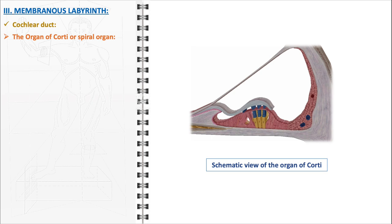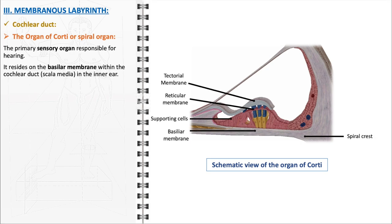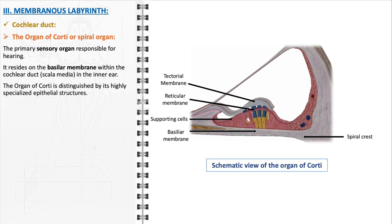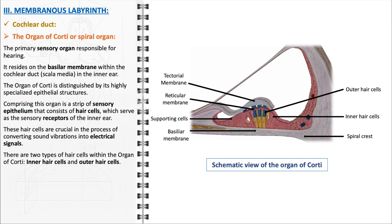The organ of Corti, or the spiral organ, stands as the primary sensory organ responsible for hearing, nestled within the cochlear duct. This remarkable organ is situated on the basilar membrane and is characterized by highly specialized epithelial structures. Central to its functionality is a strip of sensory epithelium consisting of hair cells — named for their hair-like cilia protruding from their surface — which serve as the sensory receptors of the inner ear, responsible for converting sound vibrations into electrical signals. Within the organ of Corti, there are two distinct types of hair cells: inner hair cells and outer hair cells. The inner hair cells are primarily responsible for detecting sound vibrations and converting them into nerve signals, providing the primary input to the auditory nerve fibers.